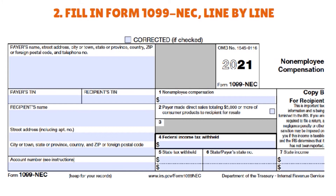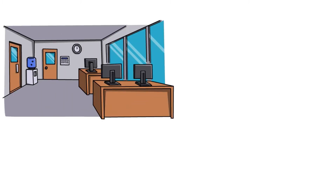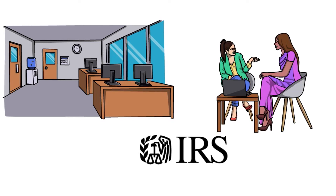Boxes five, six, and seven: the IRS does not require that you fill in these boxes, but your state department of taxation might require a copy of the form with this information. Enter the person's state income, any state taxes you might have withheld, and identify the state or states to which you will be reporting. Complete an additional 1099-NEC if you have to enter data for more than two states, since the form only accommodates two. As for where to get Form 1099-NEC: you can get it from office supply stores, directly from the IRS, from your accountant, or through business tax software. Remember, you cannot use a form downloaded from the internet — the red ink on Copy A is special and cannot be copied. You must use the official form.